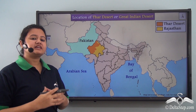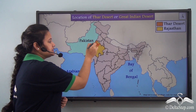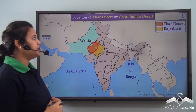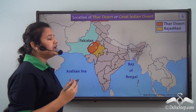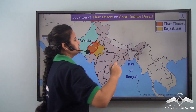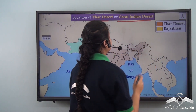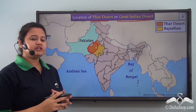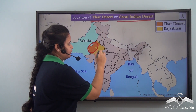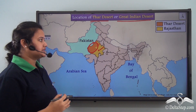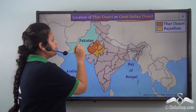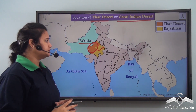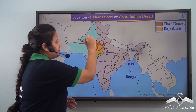The vast desert is located on the western part of India and it is known as the Thar Desert. Another name for Thar Desert is the Great Indian Desert. As we can see on this map, Thar Desert is located in the western part of Rajasthan and it also extends up to Pakistan. Thus Thar Desert forms a natural boundary between India and Pakistan.